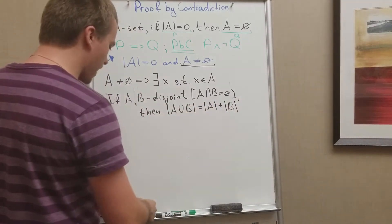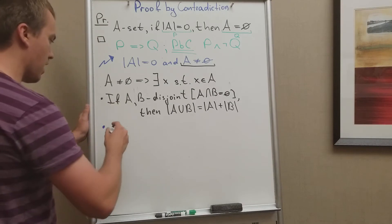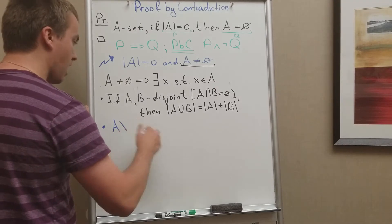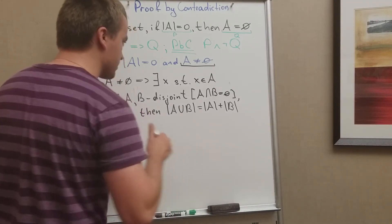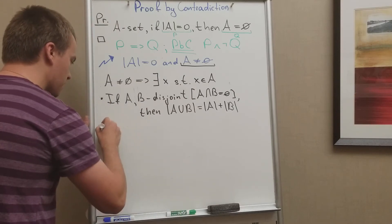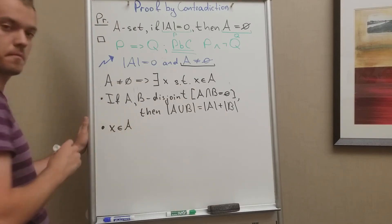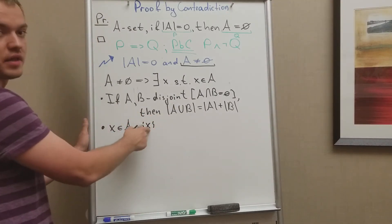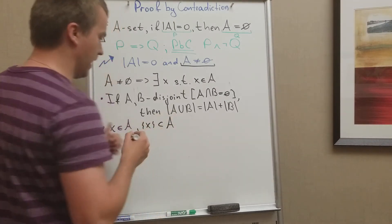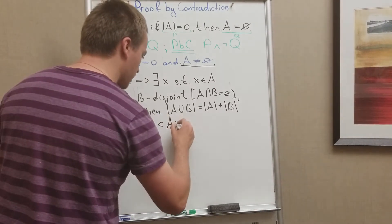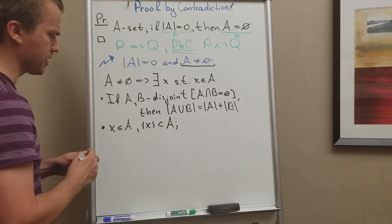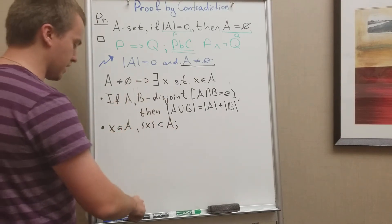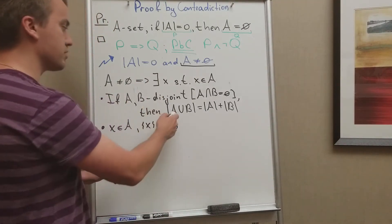Before constructing those sets, I need to mention an important property: if x belongs to A, then the subset containing only the element x — that is, {x} — is a subset of A. So I can think of my element x as a singleton subset of A, and use this to create two sets.